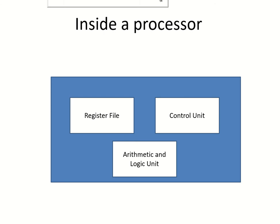In this lesson, we're going to see what is inside a processor. The main units present inside the processor are the arithmetic and logic unit, the register file, and the control unit. These are the main units.